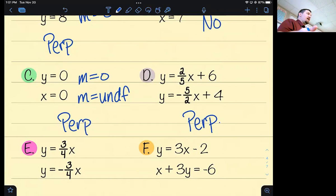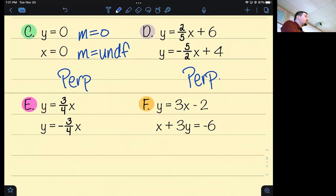What about y equals three fourths x and y equals negative three fourths x? Lizzie? No, they are not perpendicular. They're not parallel either. They're going to intersect, but not at right angles. Because they're not negative reciprocals, they'll be intersecting at some angle other than 90 degrees.